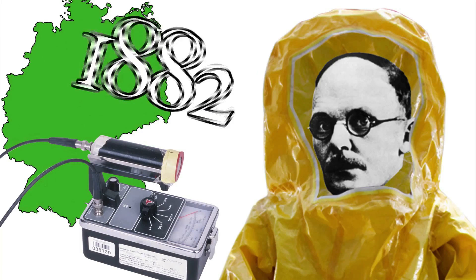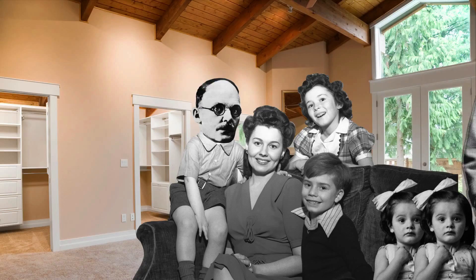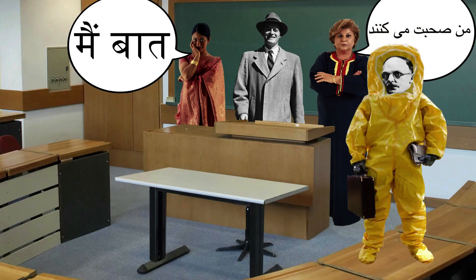Meet Hans Geiger, born in Germany in 1882. Born the son of a professor, Hans was one of five children. His father studied Indian and Iranian languages, but Hans had a more scientific bent to his genius.